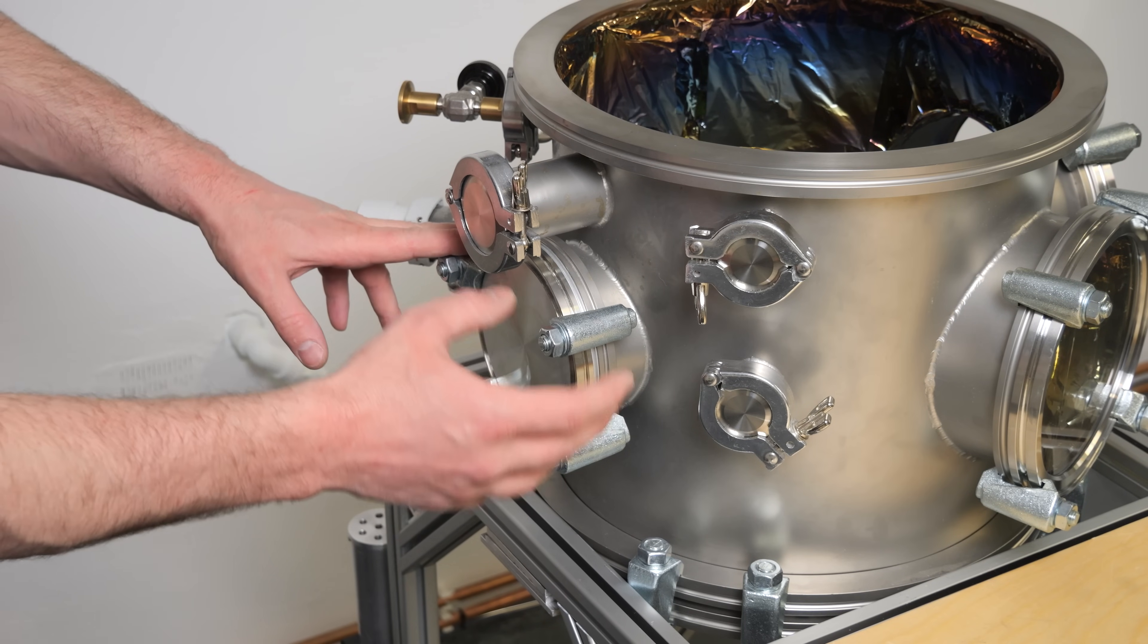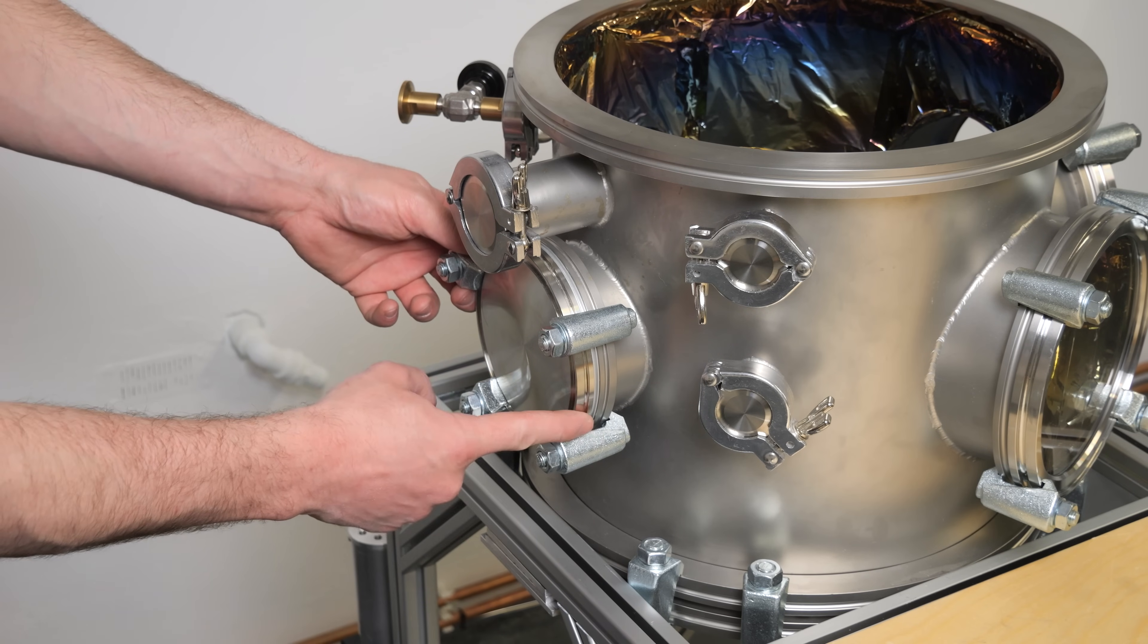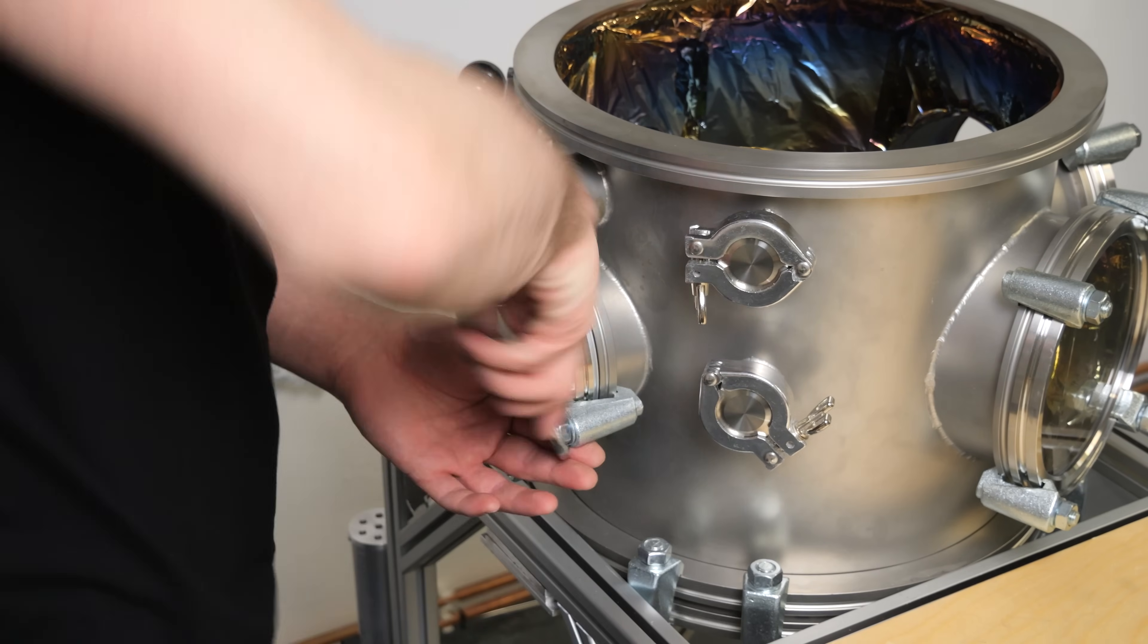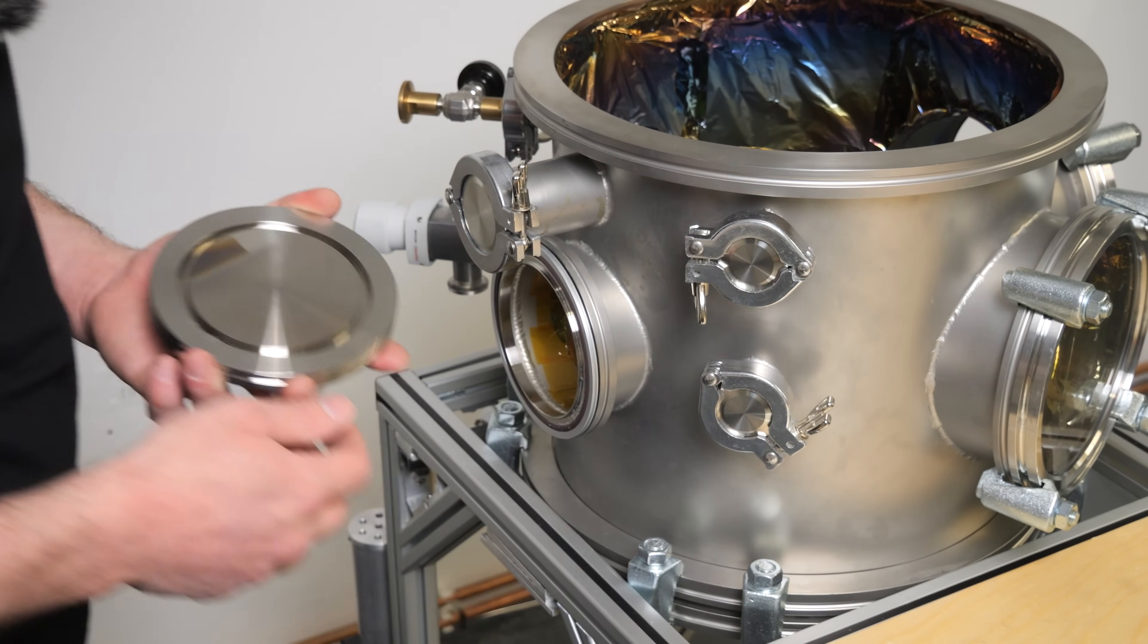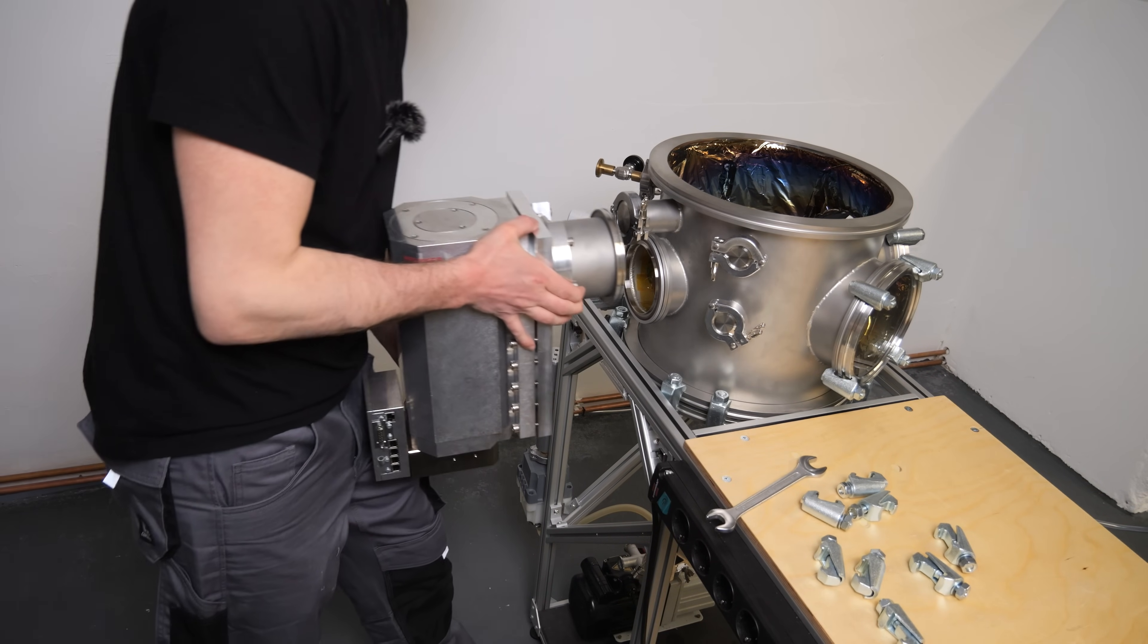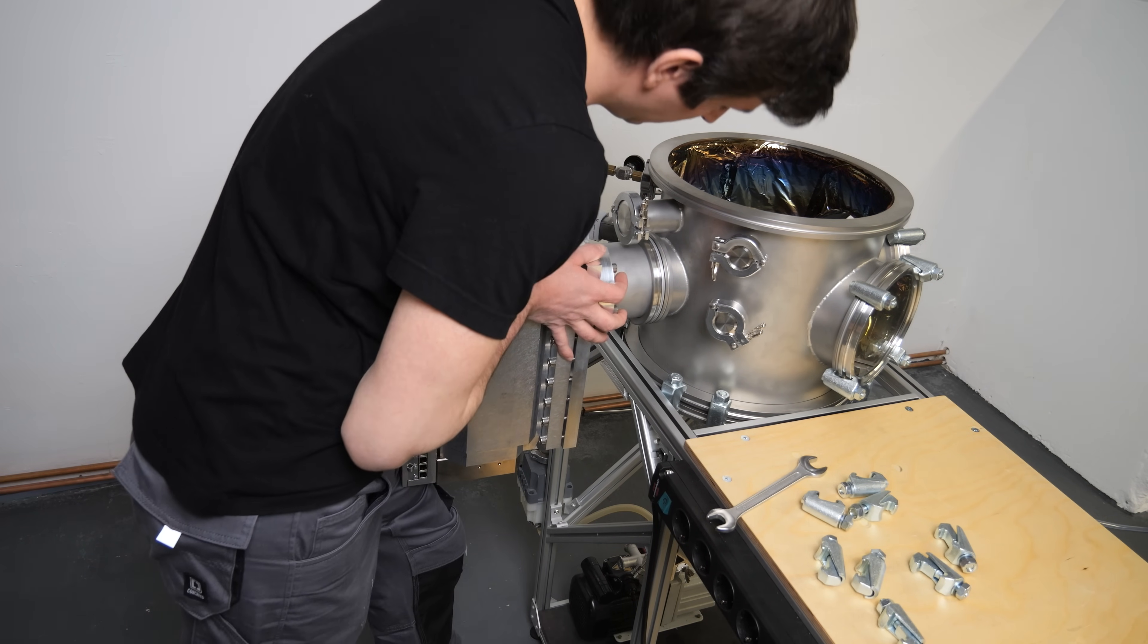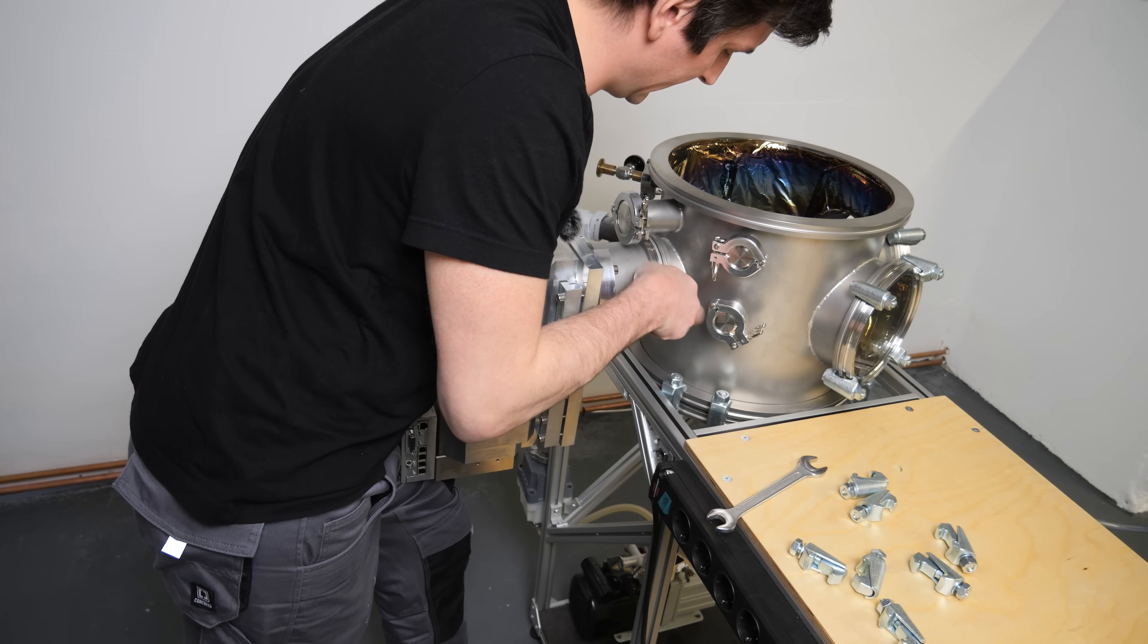Luckily when designing this chamber I considered that I might get a bigger pump at some point and that's why I added this ISO-K 100 flange here. So that will be the flange where my new split flow turbo molecular pump will be mounted to. So let's try to add the new pump without dropping it. I could really need a second hand.